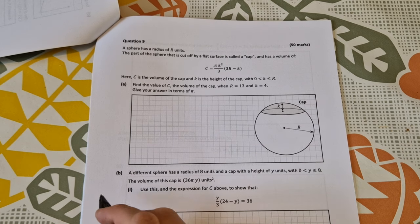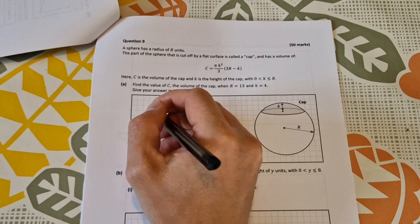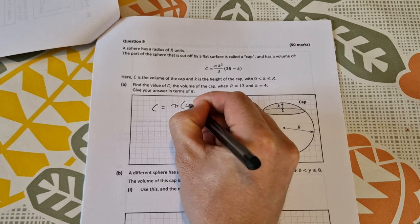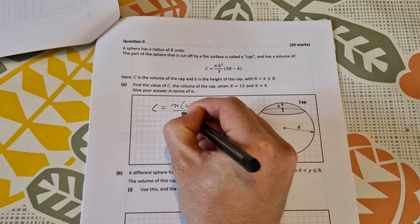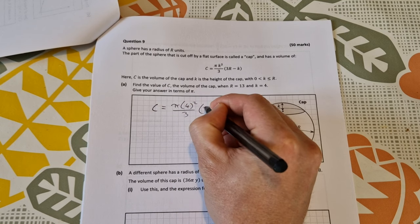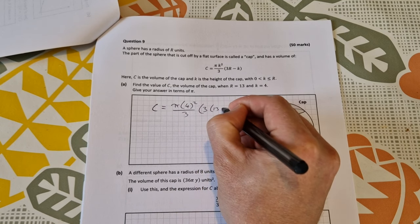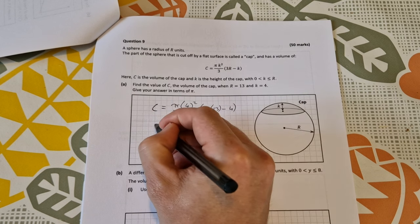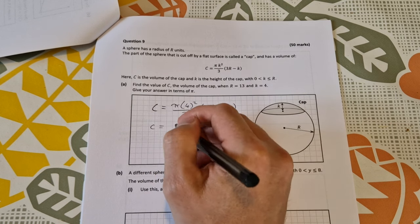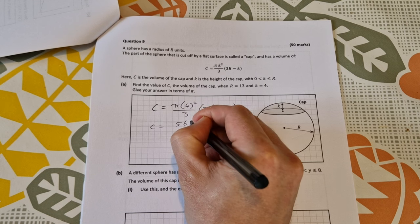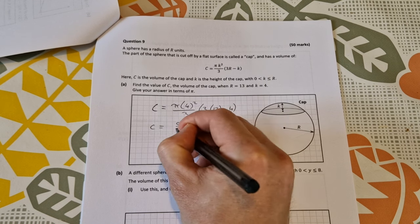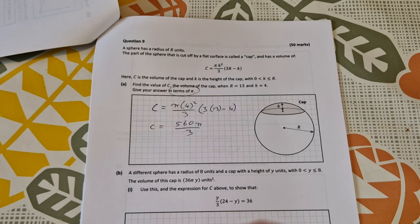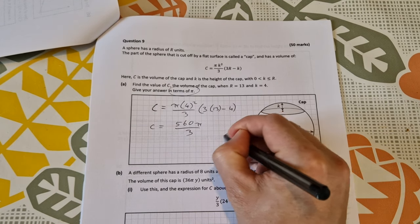So just subbing in 4 and 13 into our formula there. That's c is equal to pi times 4 squared over 3 times 3 times 13 minus 4. And pop it into your calculator, you get c is equal to 560 pi over 3. It says give your answer in terms of pi, so we need to do that. And that's worth 5 marks.